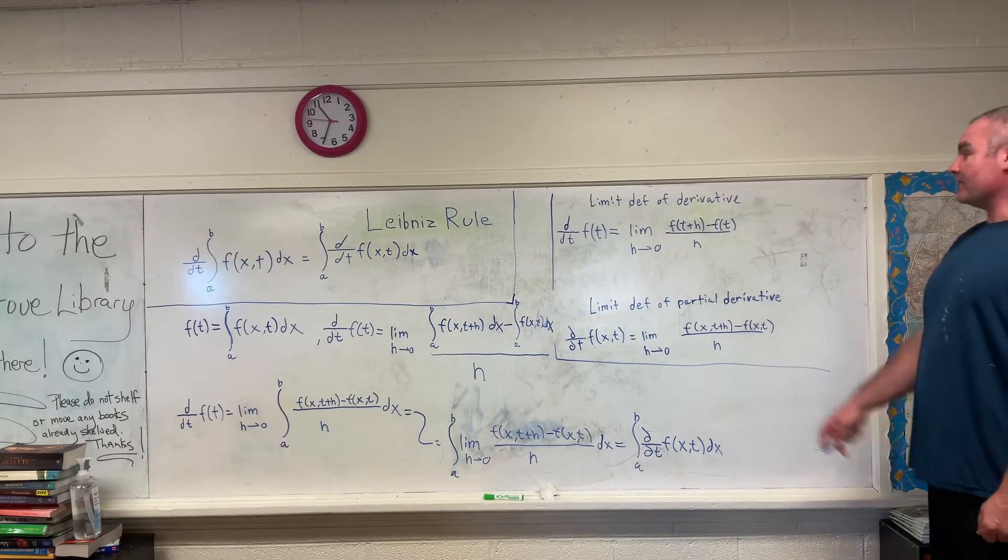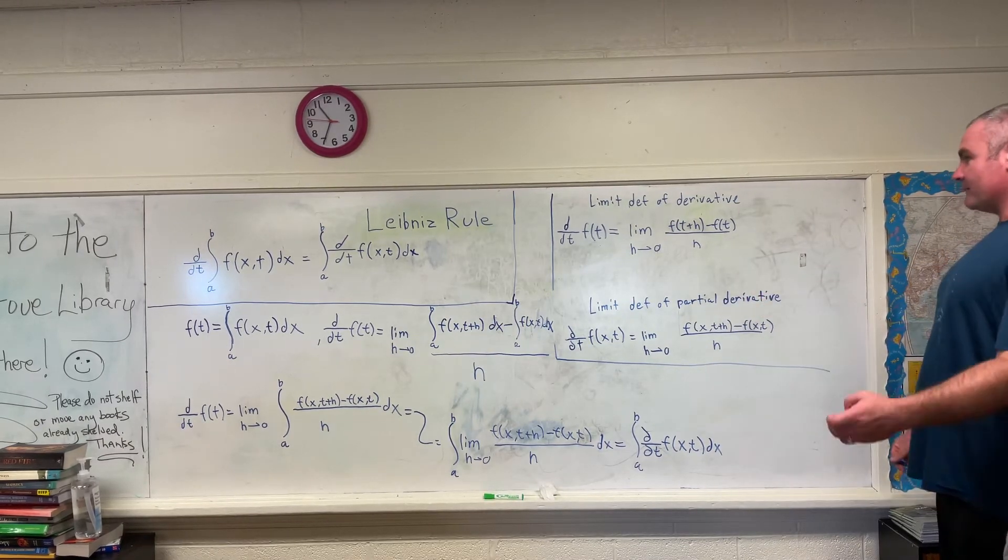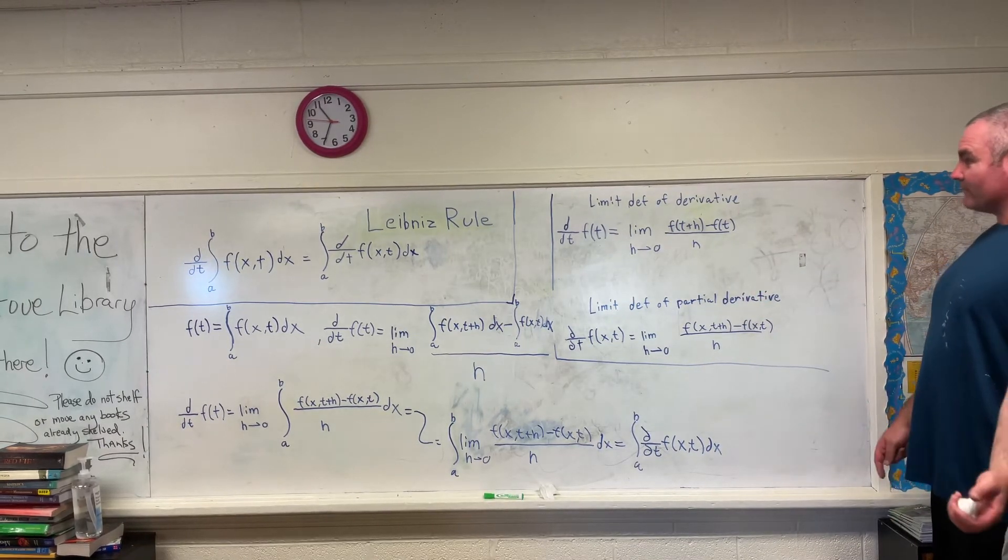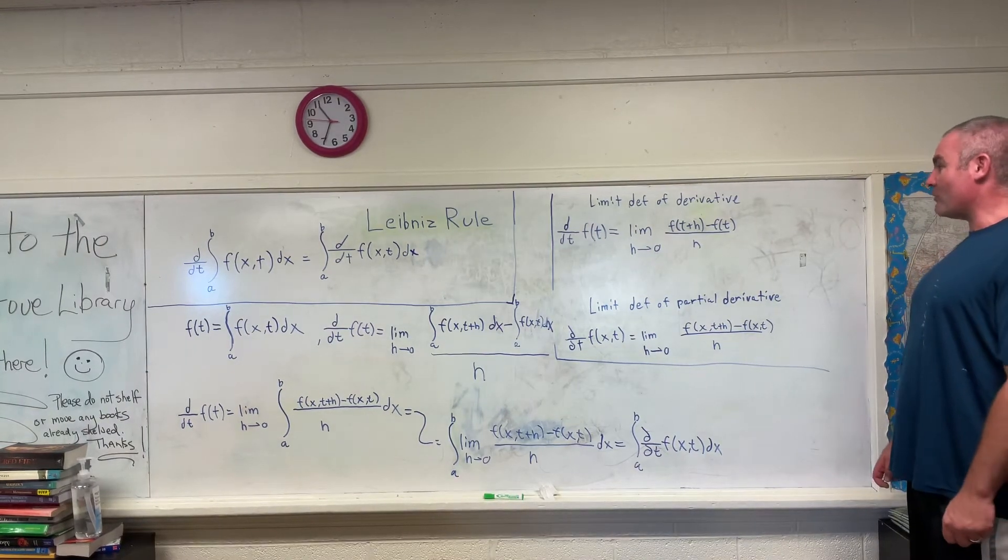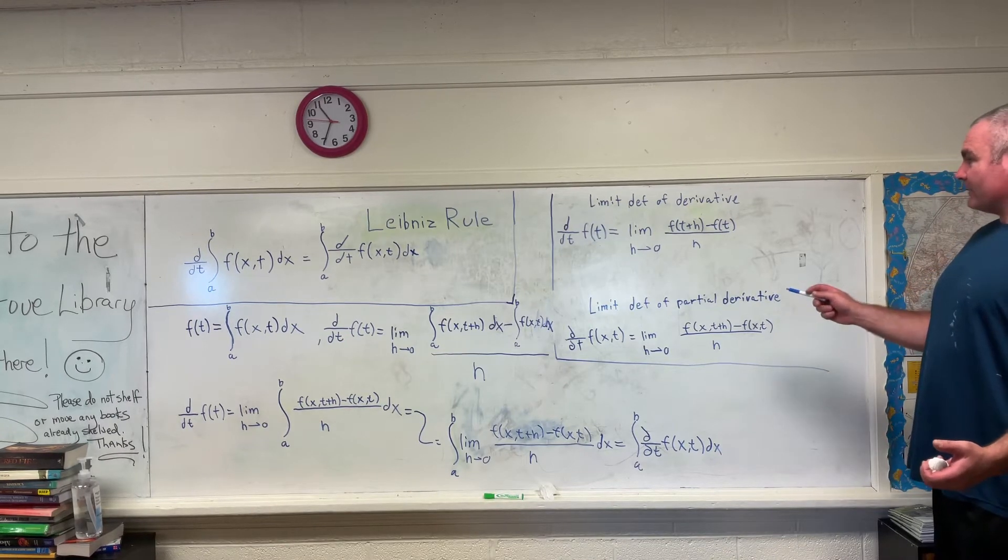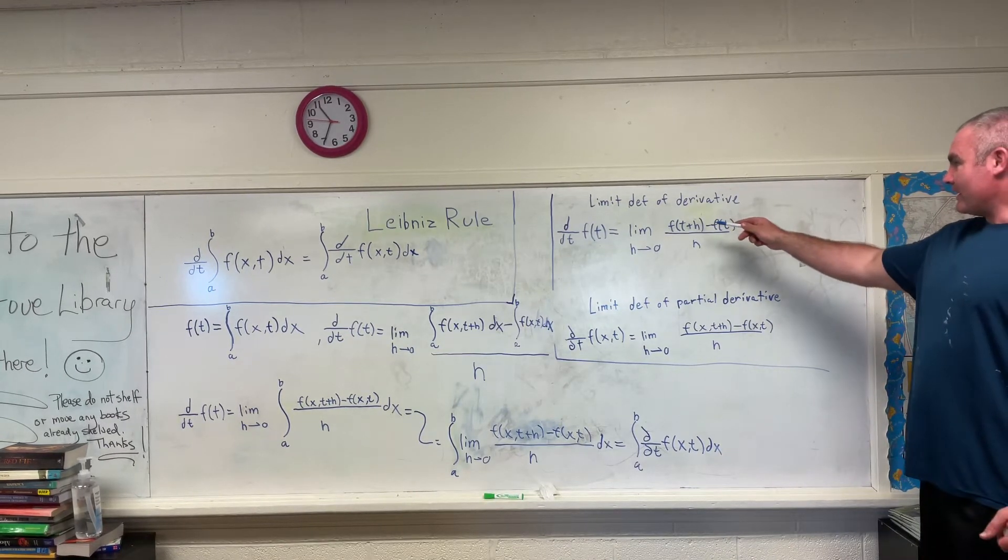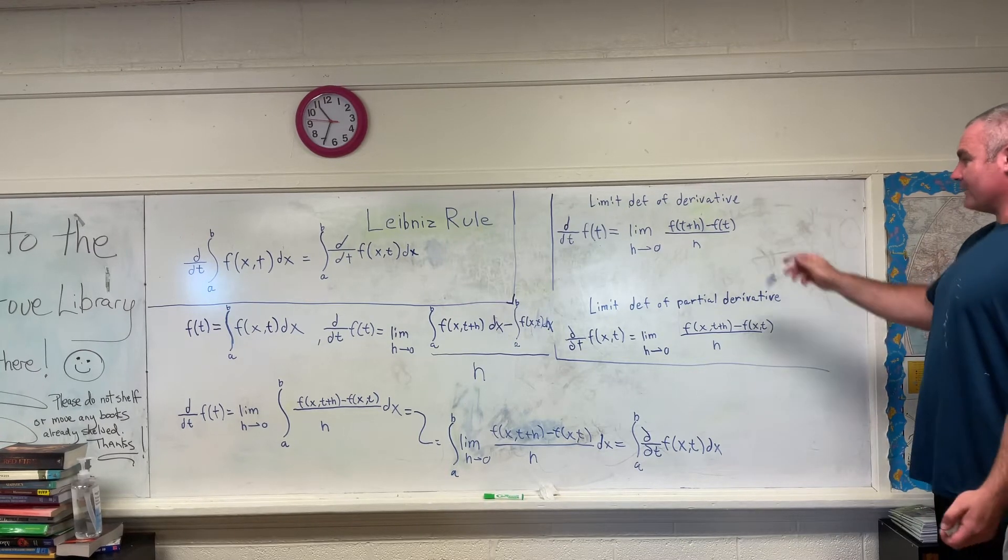A couple things we're going to need to know which I'm sure you already do. We're going to need to know the limit definition of a derivative. It's right there. If you take the derivative with respect to t of a function of t, it's equal to the limit as some value h goes to zero of that function evaluated at t plus h minus the function evaluated at t all over h,